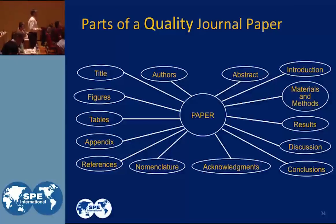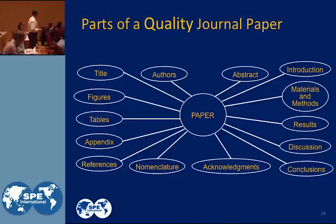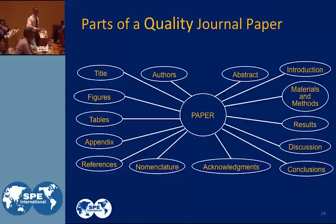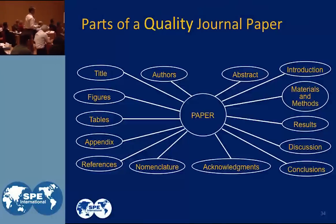Parts of a journal paper. There's the paper — a little bit more detail now. There's the title, the authors, the abstract, the introduction, materials and methods — if you've got a laboratory paper, a field application paper, or even a simulation paper, there's a method. There's results and discussion. It's a little inconsistent, but we're getting more detail now. And then conclusions. These all go in that order.